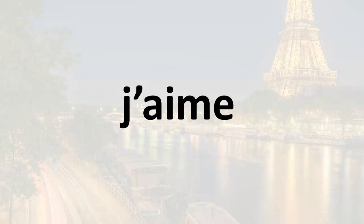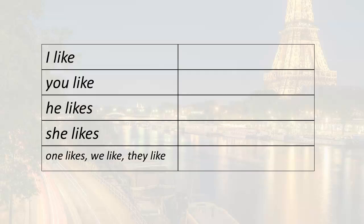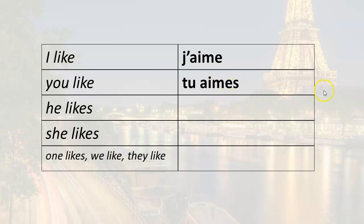So we have j'aime. Tu aimes — you like. This is the informal you. I have my root; what do I add onto it? You have to have this memorized. When you use tu, the ending is -es. So tu aimes — you like.